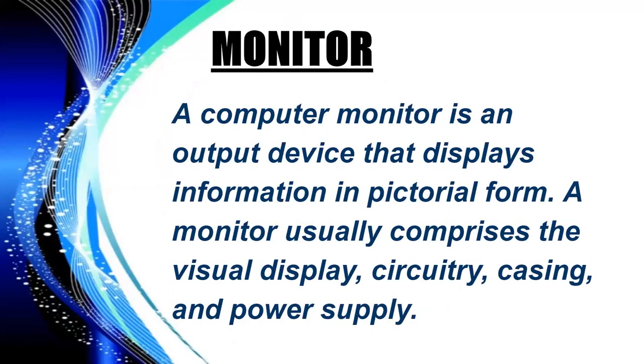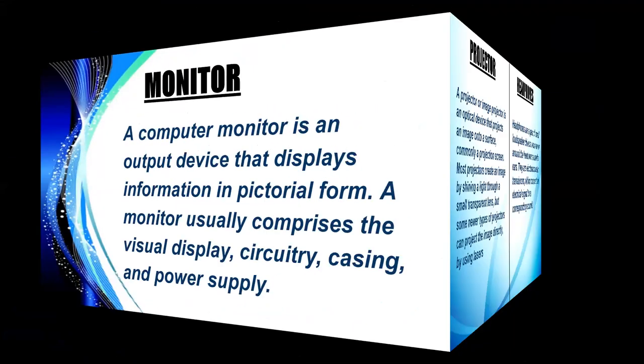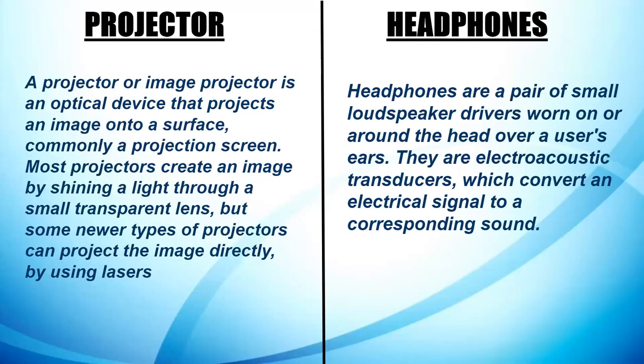Monitor. A computer monitor is an output device that displays information in pictorial form. A monitor usually comprises the visual display, circuitry, casing, and power supply. Projector. A projector or image projector is an optical device that projects an image onto a surface, commonly a projection screen. Most projectors create an image by shining a light through a small transparent lens, but some newer types can project the image directly using lasers.